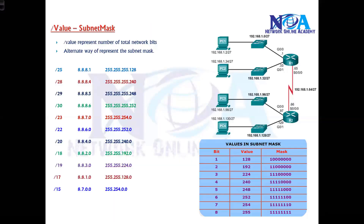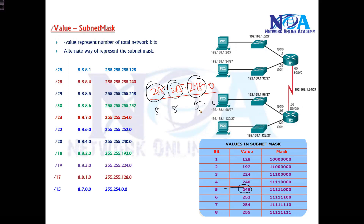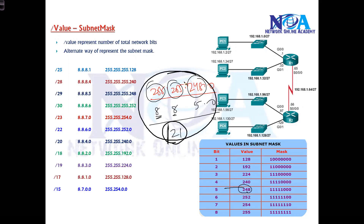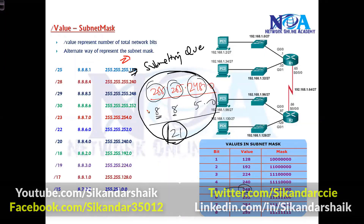This is what slash notation or slash value is — an alternate way to write your subnet mask. In some devices you write it as a slash value; in others, in dotted-decimal format. You should know both conversions. For example, 255.255.248.0 means 8+8+5 = 21 bits, so the equivalent is /21. This is very useful when solving subnetting questions or identifying which subnet an address belongs to.